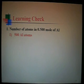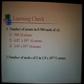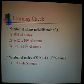The number of atoms in 0.5 moles of aluminum. How many moles of sulfur are in 1.8 times 10 to the 24th sulfur atoms.